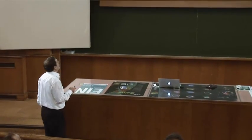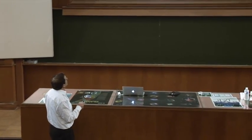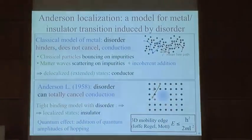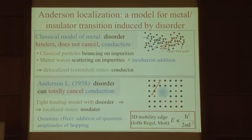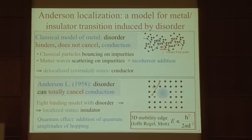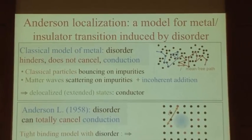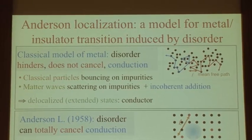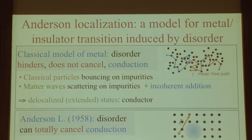Le problème est celui de la conduction dans un métal. Le modèle de Drude classique, c'est des électrons qui font une trajectoire aléatoire en rebondissant sur des impuretés, et à partir de ce modèle on obtient la loi d'Ohm. Si vous augmentez le taux d'impuretés, vous comprenez bien que la conductivité diminue, la résistivité augmente. Mais en aucun cas la conductivité va tomber strictement à zéro.